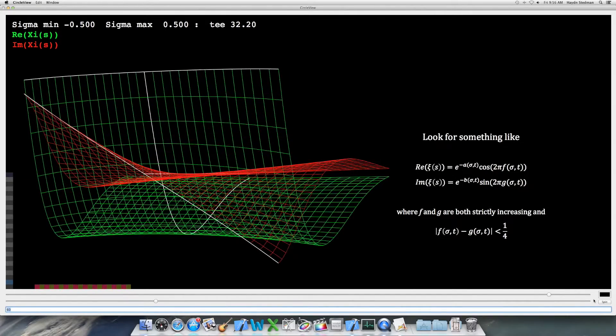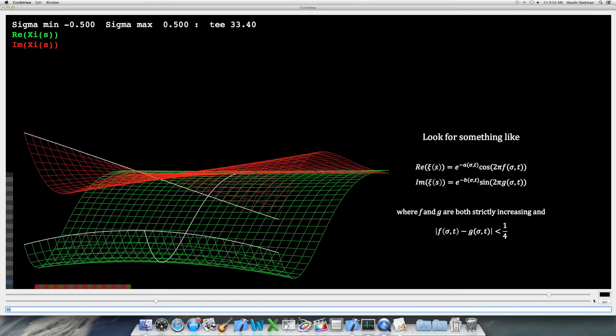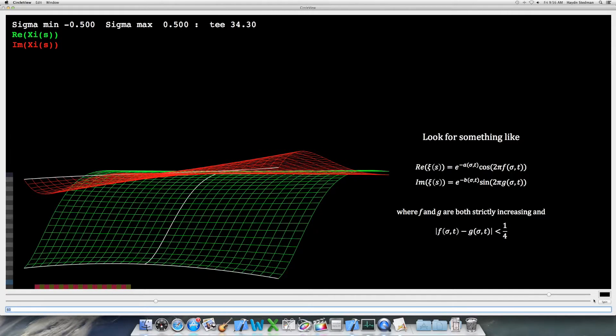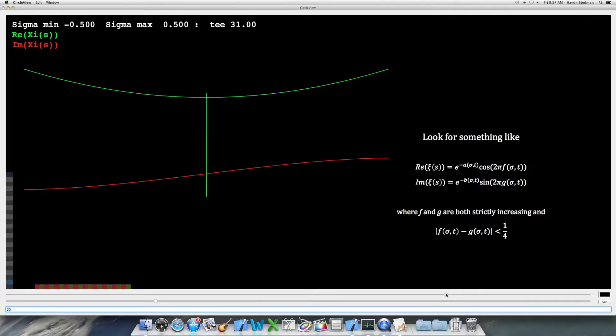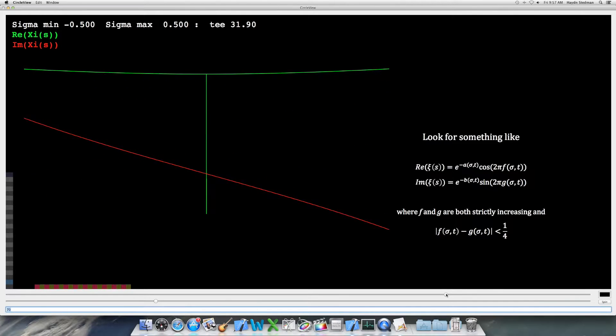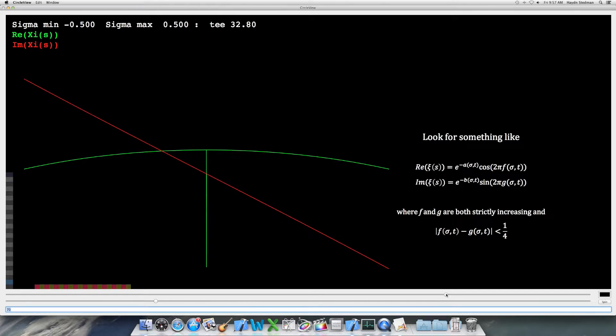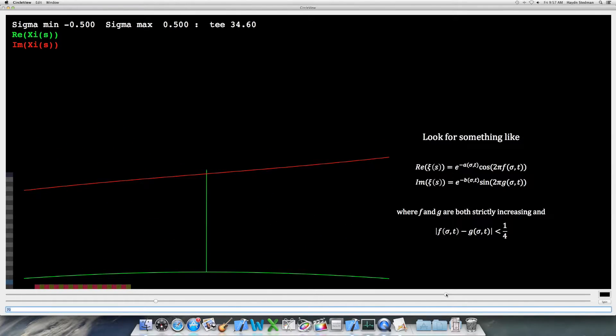Looking at these coordinated waves we'd hope to find an expression of this form. Clearly f and g are increasing and absolute value of f minus g is strictly positive and less than a quarter, then the Riemann hypothesis would be very straightforward.